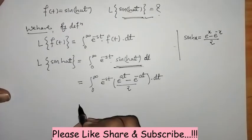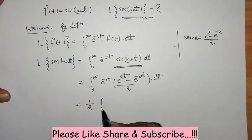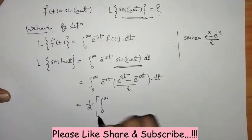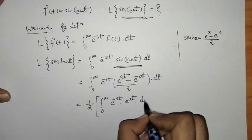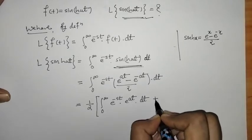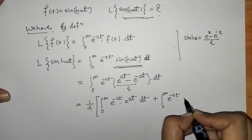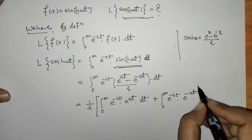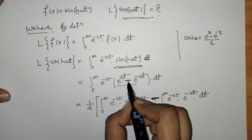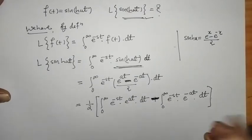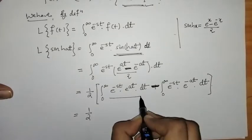Now we can take 1/2 outside and separate this integral. So here we have the integral of e raised to minus st times e raised to at, and similarly the integral of e raised to minus st times e raised to minus at. This gives us e raised to minus(s minus a)t and e raised to minus(s plus a)t respectively.